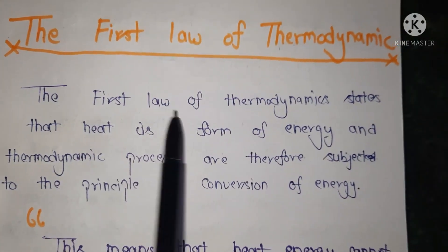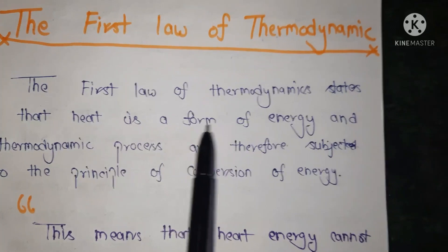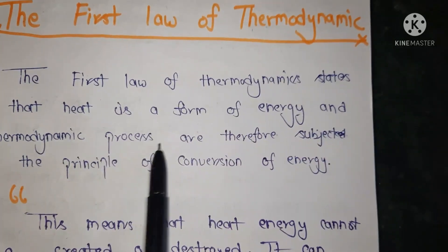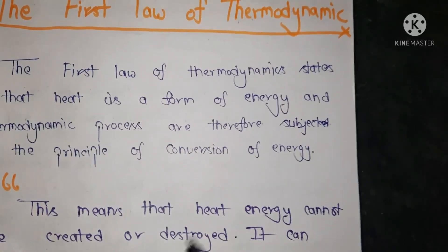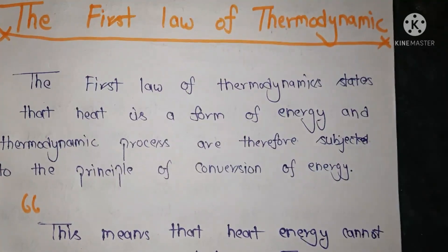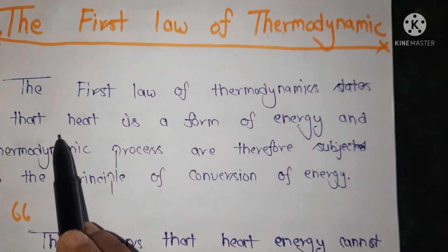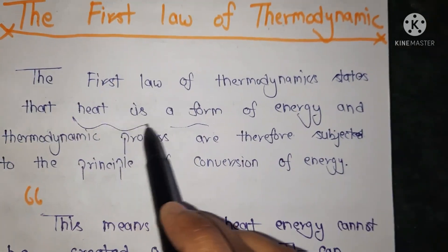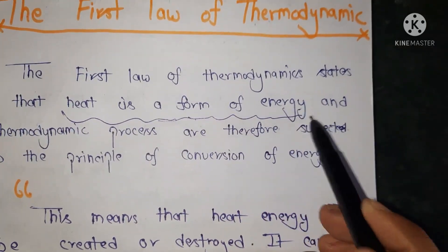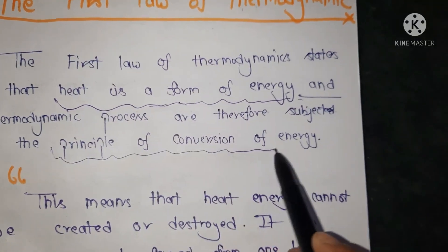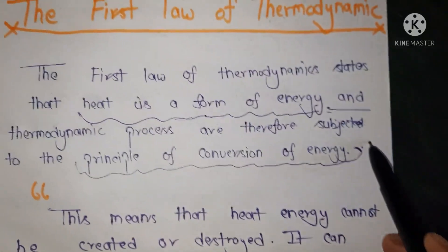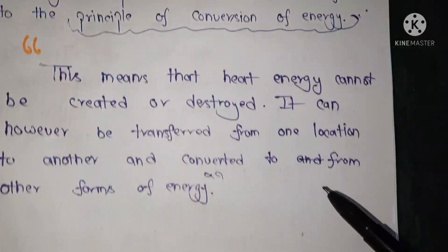The first law of thermodynamics states that heat is a form of energy and thermodynamic processes are therefore subjected to the principle of conversion of energy. The first law states that heat is in the form of energy and this principle is also known as the conversion of energy. Why it is called the conversion of energy, that we will discuss in the next line.